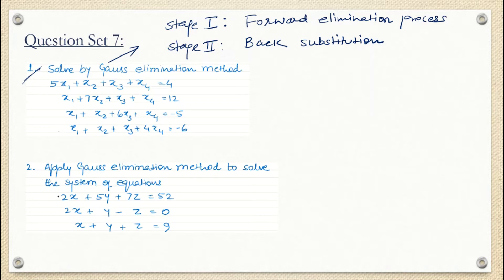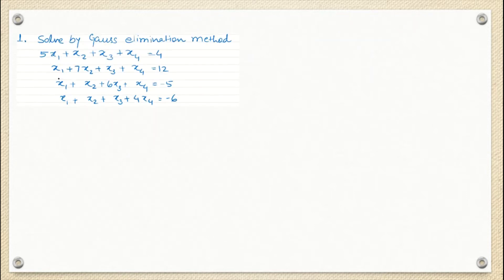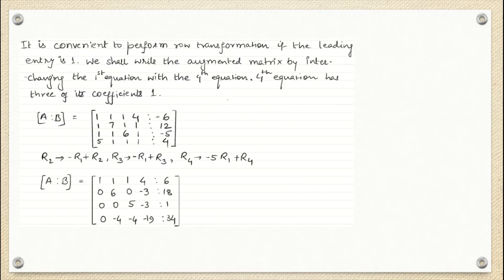In the second question, you will see that only three equations and three unknowns are there. Let's see how to solve question number one. This way of writing the system is called the augmented matrix.